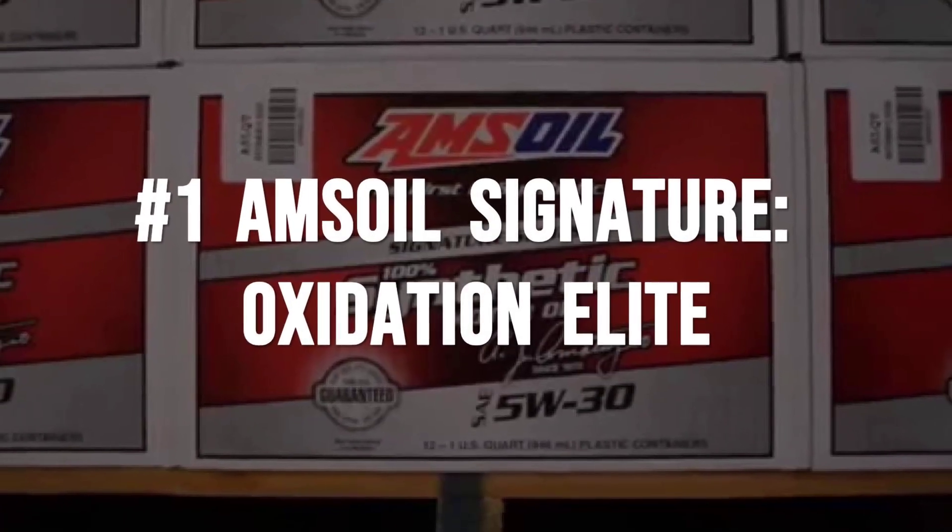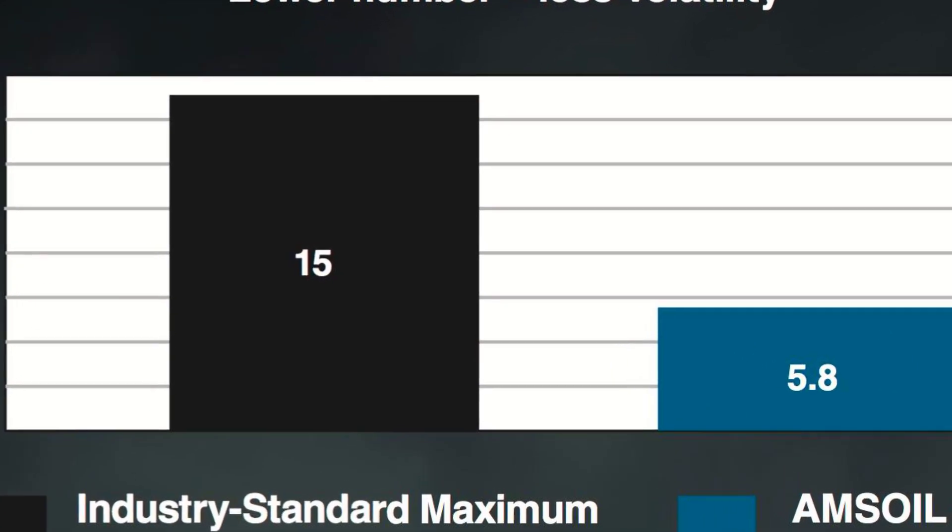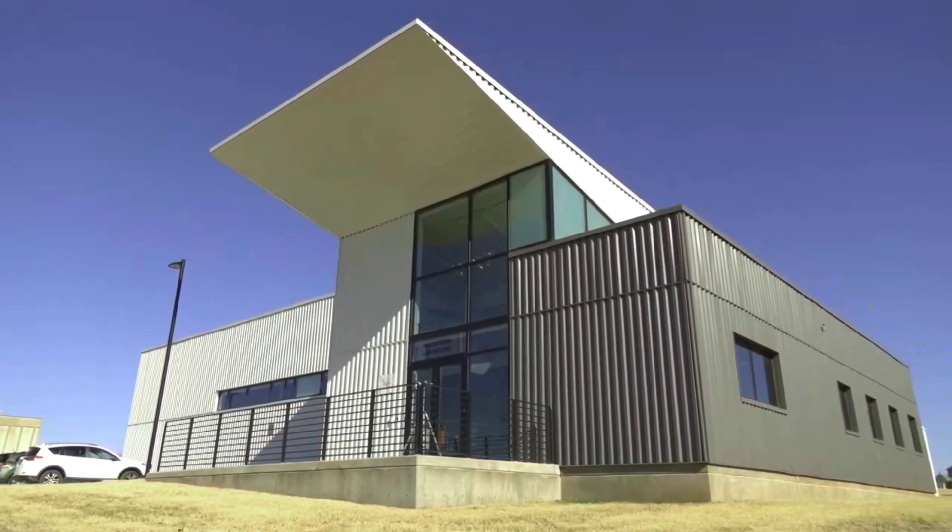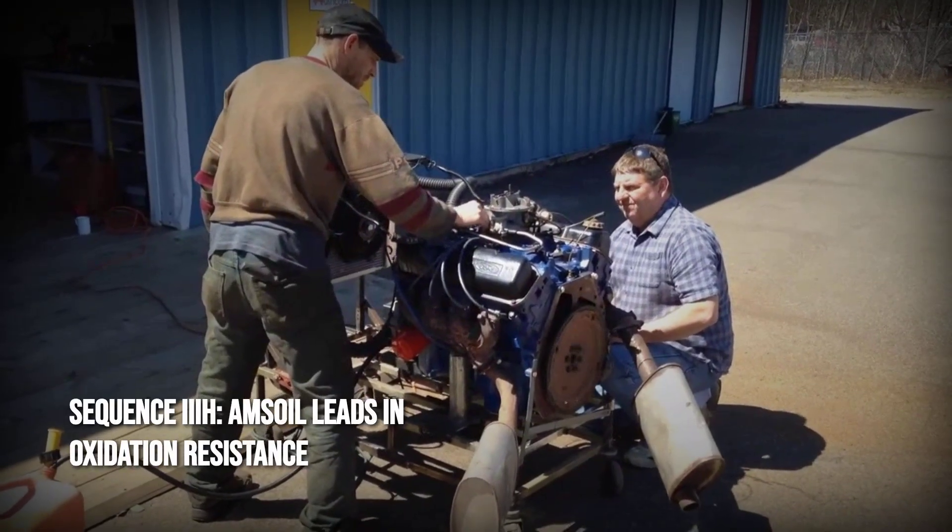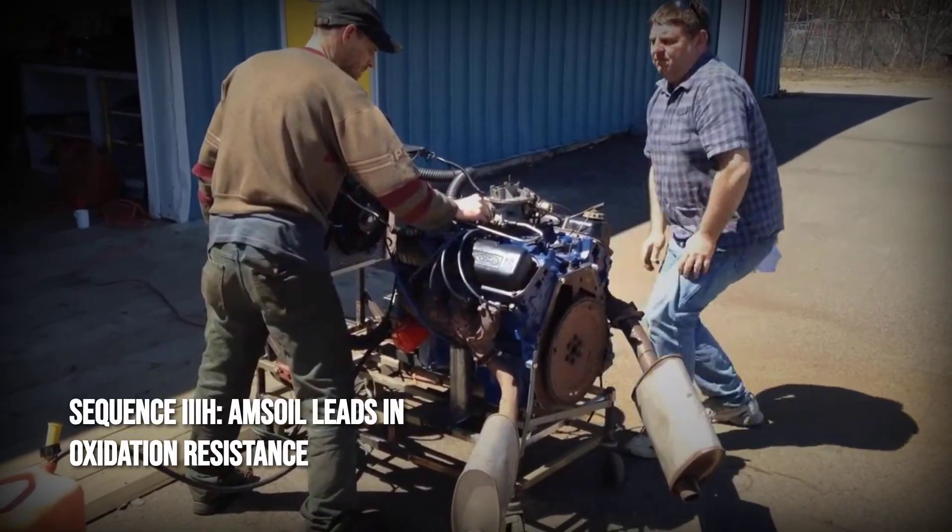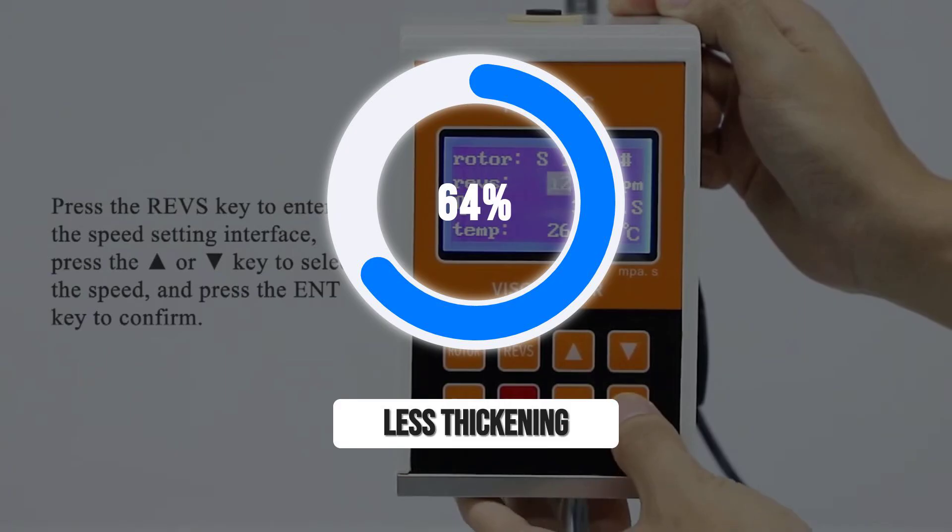Amsoil Signature Series claims the top spot for one reason: no other oil in this ranking withstands heat and oxidation for as long or as reliably in the lab. In the Sequence IIE-H test, an industry benchmark for high temperature stability, Amsoil Signature Series showed roughly 64 percent less viscosity increase than the average synthetic, even after 80 hours at 150 degrees Celsius.